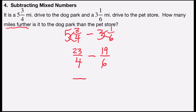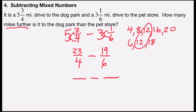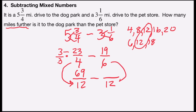Now I'm going to find a common denominator. Listing multiples of four — 4, 8, 12 — and multiples of six — 6, 12 — I see twelve is in both lists, so twelve will be my common denominator. What number times four gives me twelve? That's three, so I multiply by three over three. Three times twenty-three is sixty-nine, so twenty-three-fourths is renamed as sixty-nine over twelve. What number times six gives me twelve? That's two, so I multiply by two over two. Two times nineteen is thirty-eight, so nineteen over six is renamed thirty-eight over twelve.